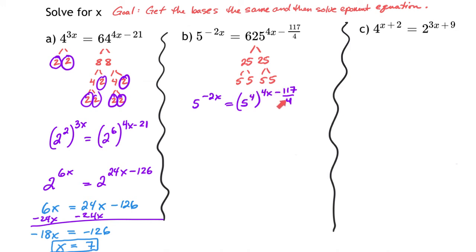Then I have my power to a power, which means I'll multiply 4 times 4x and 4 times 117 fourths. That turns into 5 to the power of 16x minus 117. I'll keep the same thing on the left side.